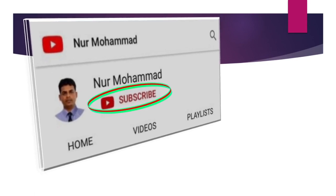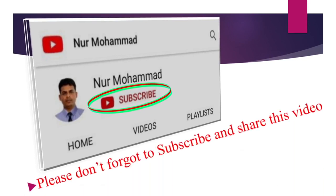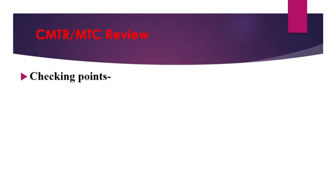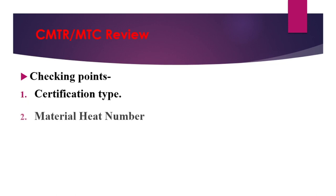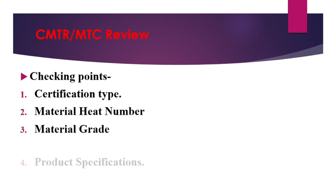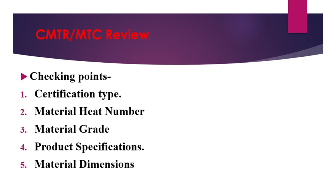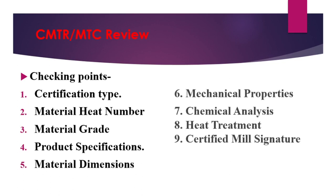I will request all of you: please subscribe to my YouTube channel and don't forget to share with your friends. Let's start today's lecture. These are the things I discussed in lecture number 32 also, so I will repeat these points again: certification type, material number, material grade, product specification, material dimension, mechanical properties, chemical analysis, heat treatment, certified mill signature. In this lecture I will try to show you where all the points are.